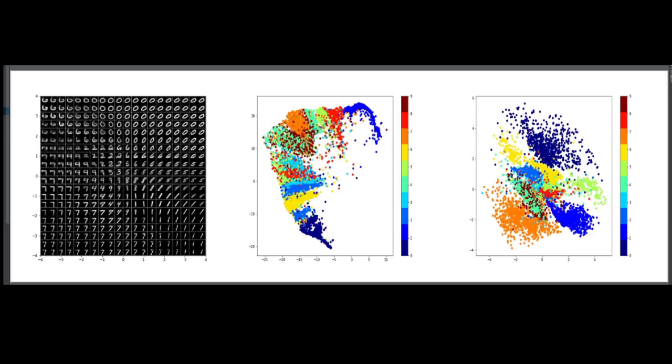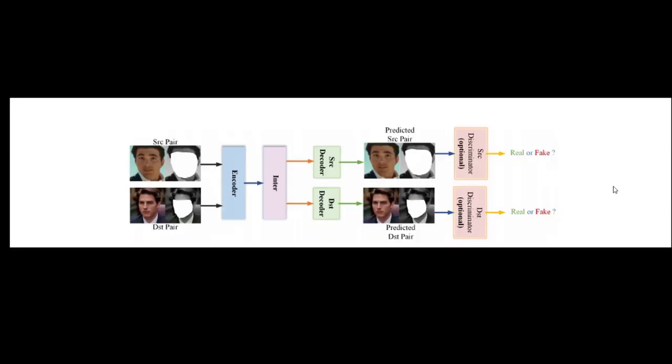So how do we fix this problem? It's simple. We use a shared encoder and interlayer. This is the architecture of the deepfake model used by DeepFace Labs. As we can see there is a shared encoder and interlayer where both images A and B enter. And then we see these images being decoded with their own decoder.